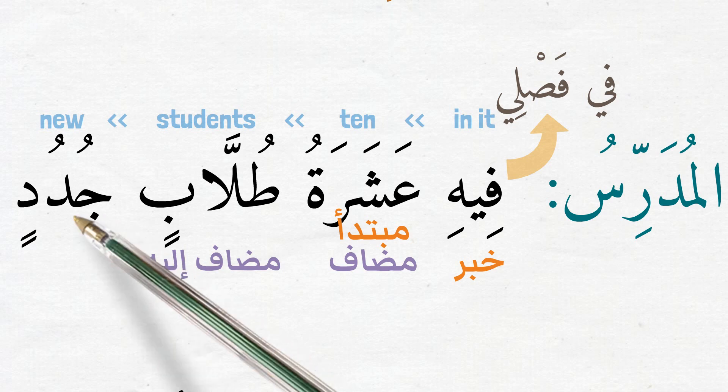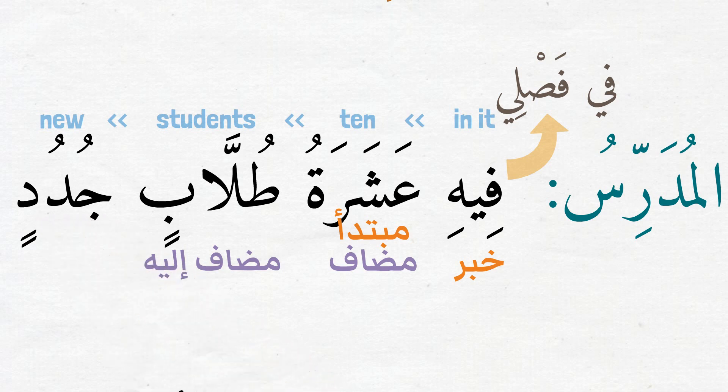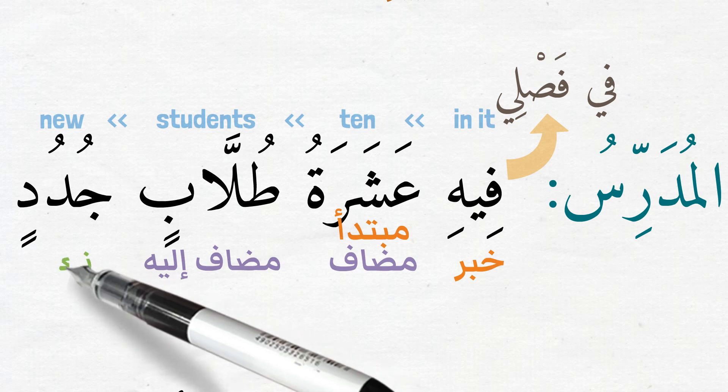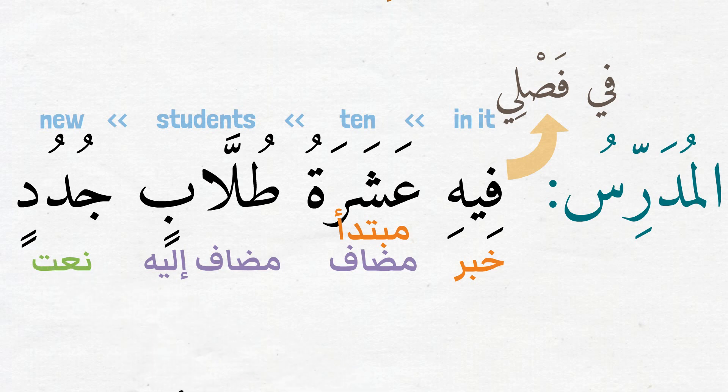What is the word جدود functioning as in the sentence? It is نعت for طلاب. That is why it follows the منعوت طلاب as مجرور, الجمع, مذكر, and ناكرا.